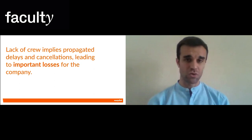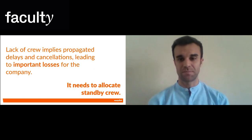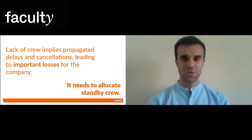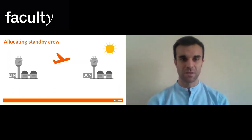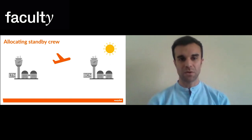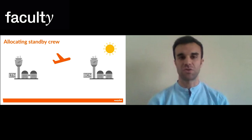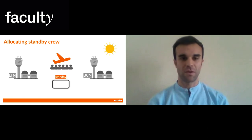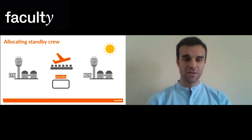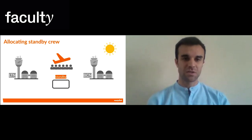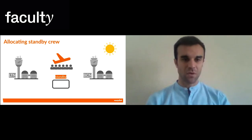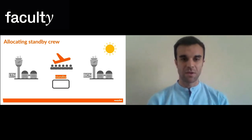The solution of course is to allocate standby crew. But how do we do it? Let's go back to our example. How do we allocate standby crew to ensure that Alice and Bob can arrive to their destinations? A flight operates with six crew members and we have been doing this route for a while, so we know that usually no one is missing.